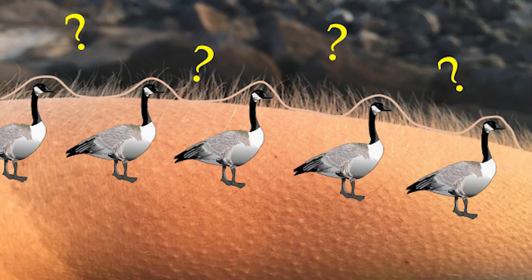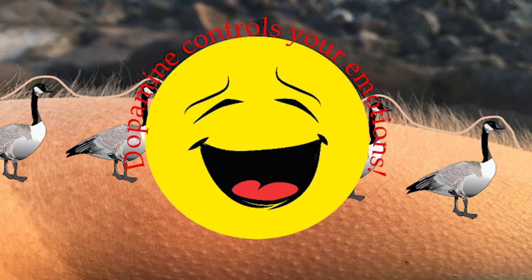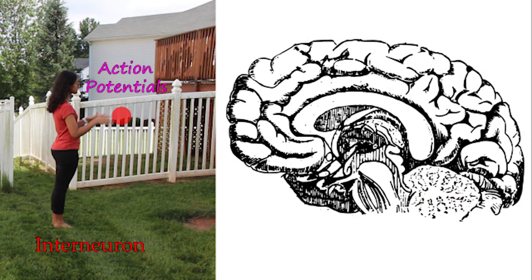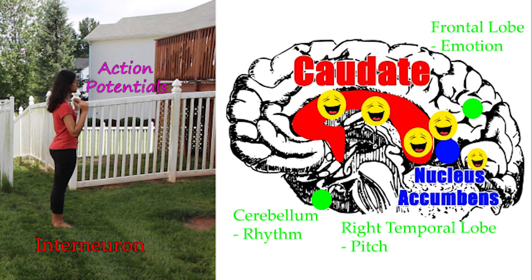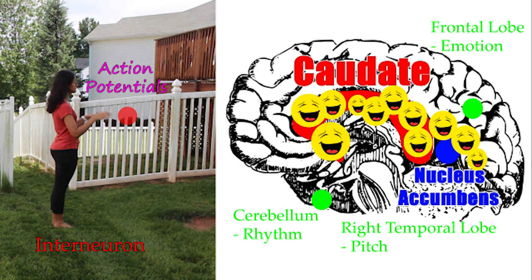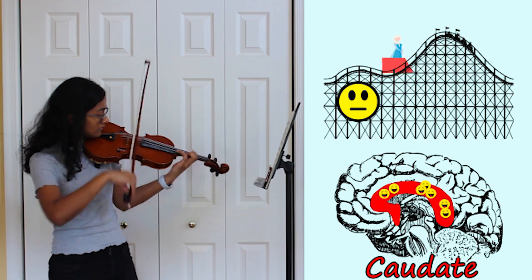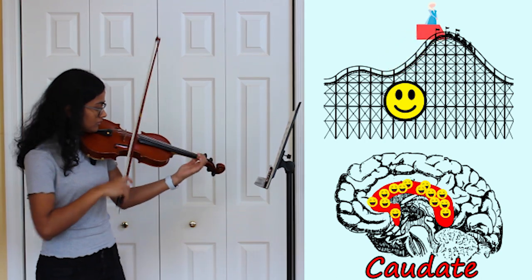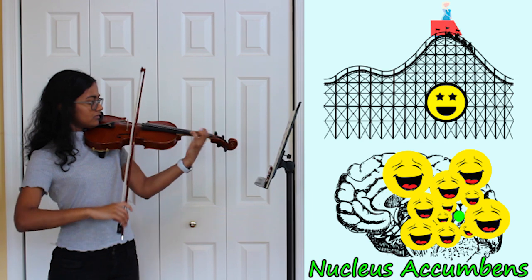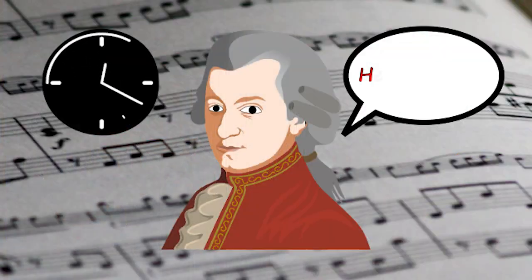But what does any of this have to do with those goosebumps I get listening to Beethoven? Well, you can thank the neurotransmitter dopamine for that. The action potentials that the interneuron sends go to many parts of the brain. The ones responsible for the chills are the caudate and the nucleus accumbens, which release a ton of dopamine. As the song is developing, the caudate is filling with dopamine and is priming you with the expectation for a reward at the climax. Finally, when the high note is hit, the nucleus accumbens is flooded with dopamine, and you get goosebumps and chills.